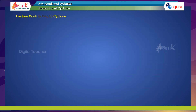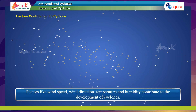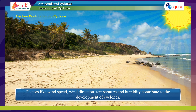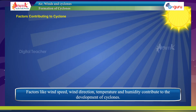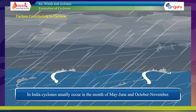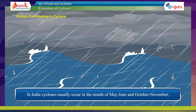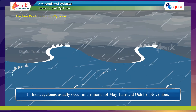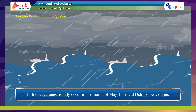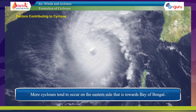Factors contributing to cyclones include wind speed, wind direction, temperature, and humidity. In India, cyclones usually occur in the months of May to June and October to November. More cyclones tend to occur on the eastern side, towards the Bay of Bengal.